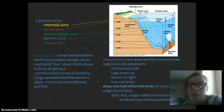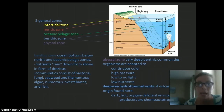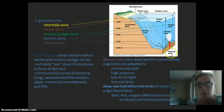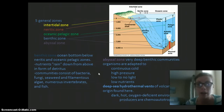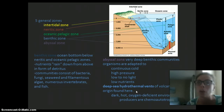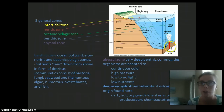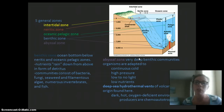The abyssal zone is at the very deep bottom of the ocean within the benthic communities. Organisms here must be adapted to cold temperatures, high pressure, limited to almost no light, and low nutrients. In this region we have deep-sea hydrothermal vents, which are like underwater volcanoes. They are dark, extremely hot, and oxygen deficient, but other chemicals such as high sulfur concentrations are produced. The producers here are chemoautotrophs — they don't get energy from the sun, but they still produce their own food using chemicals from the hydrothermal vents.